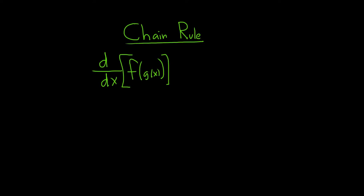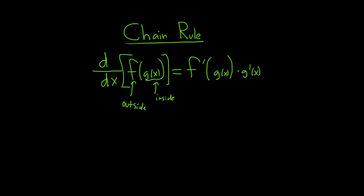So how do you use the chain rule and how do you memorize it? You want to think of f as your outside function, and g is your inside function. The chain rule says that when you take this derivative, it's the derivative of the outside evaluated at the inside — so you leave the inside untouched — times the derivative of the inside function.